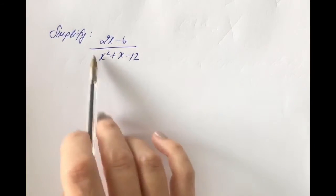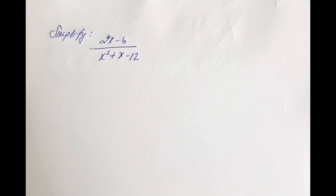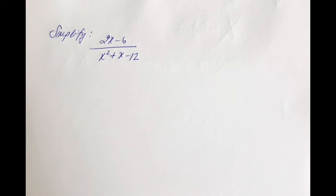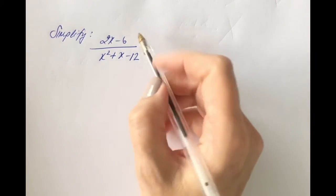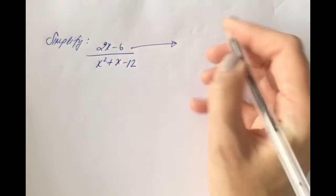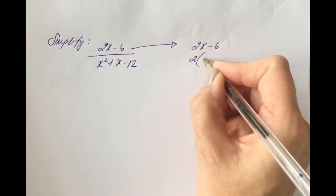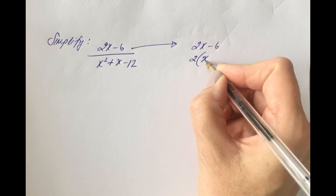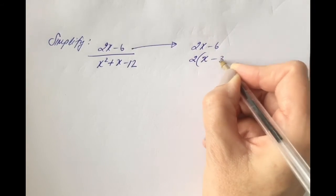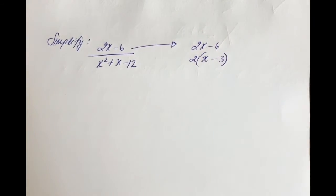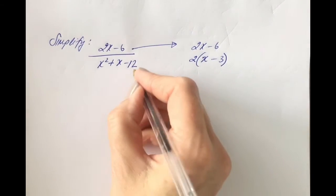Let's simplify an algebraic fraction. First, factorize anything you can. Looking at the top, factorizing (2x − 6): I can pull out the 2 as a common factor to get 2(x − 3). Then for the denominator, it's a quadratic trinomial (type 4), so I'll use the four-step method.